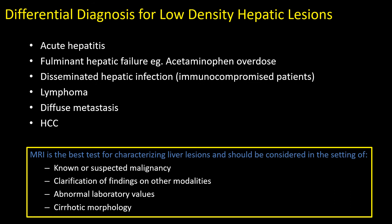When thinking about the differential for low-density lesions, the most common confounding issue arises when seeing this on a single portal venous phase CT. Other reasons for low density within the liver include acute hepatitis or fulminant hepatic failure, disseminated hepatic infections such as micro-abscesses, histoplasmosis, fungal infections, and granulomatous disease. Lymphoma can be very infiltrative and low in attenuation. Metastatic disease — particularly colorectal and rectal cancer — tends to be hypo-enhancing, as do many adenocarcinomas. HCC can actually contain fat, as can adenoma, but these are often differentiated based on enhancement patterns rather than just in- and opposed-phase appearance.